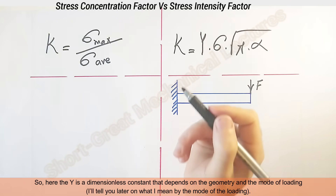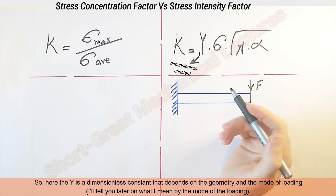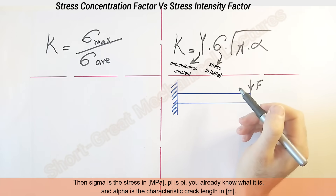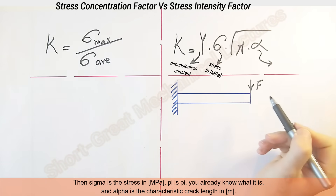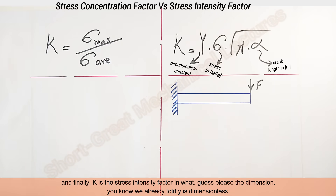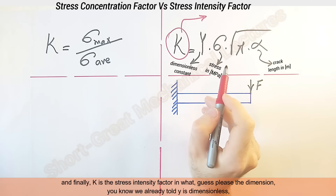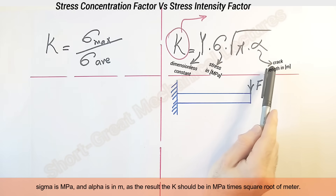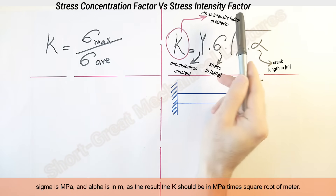Here, Y is a dimensionless constant that depends on the geometry and the mode of loading — I'll tell you later what I mean by mode of loading. Sigma is the stress in megapascal. Pi is pi, you already know what it is. And alpha is the characteristic crack length in meters. K is the stress intensity factor, and since Y is dimensionless, sigma is in megapascal, and alpha is in meters, K should be in megapascal times square root of meter.